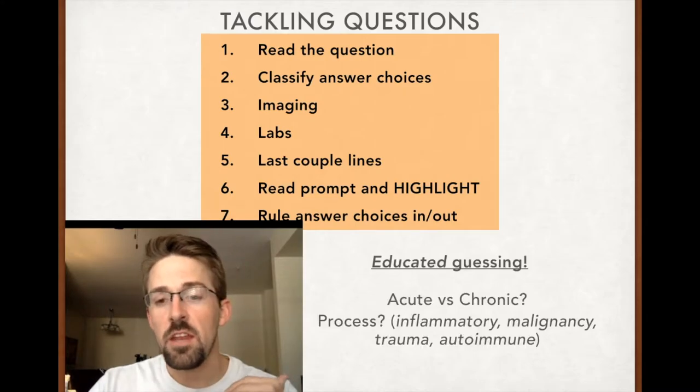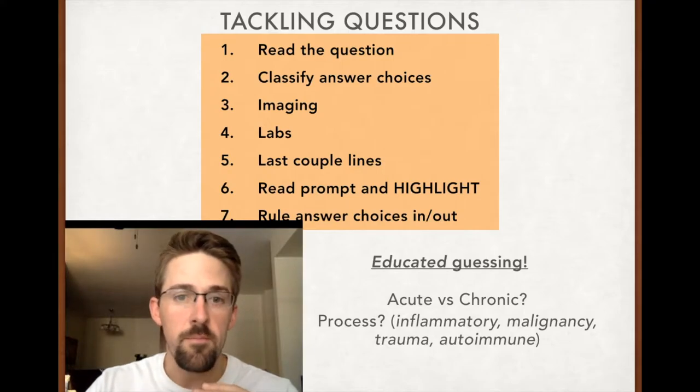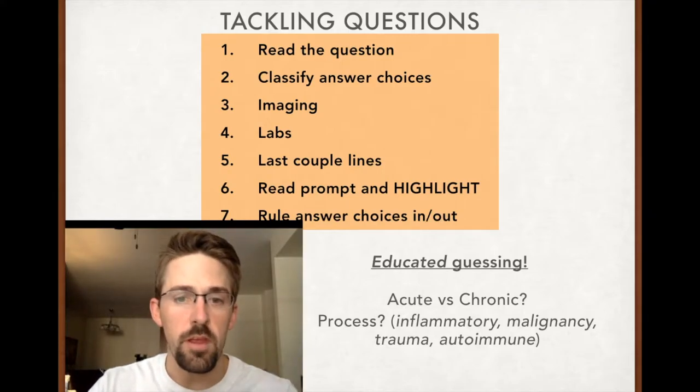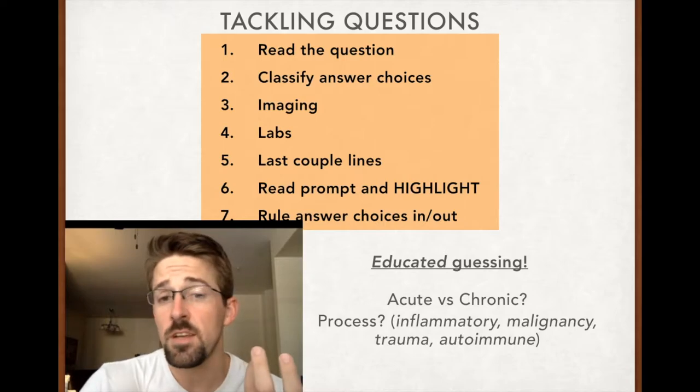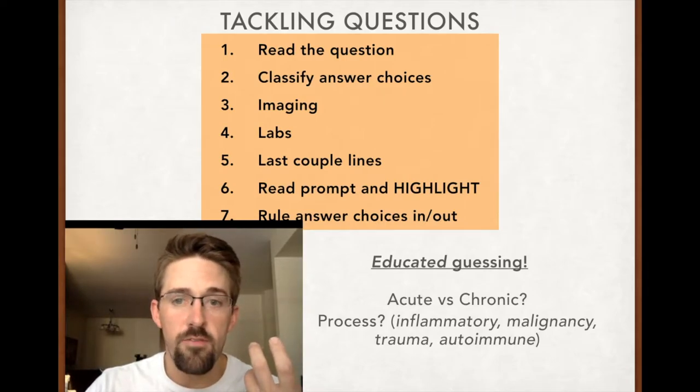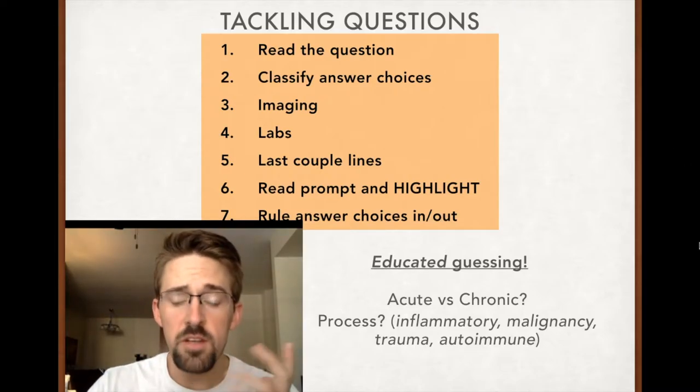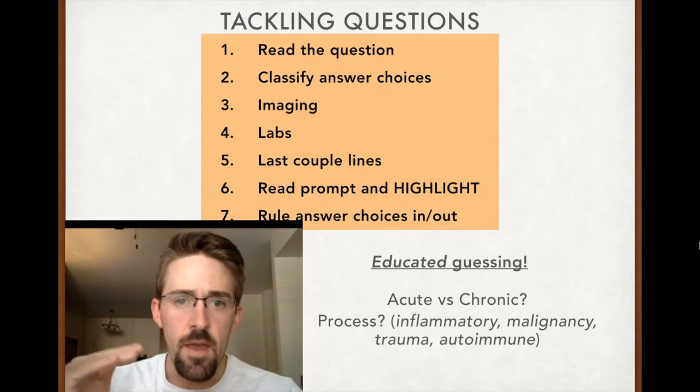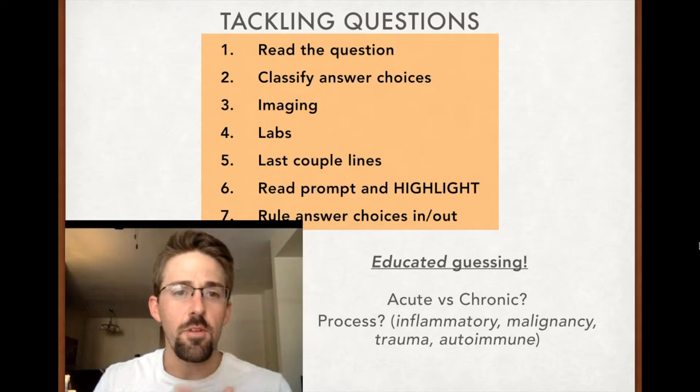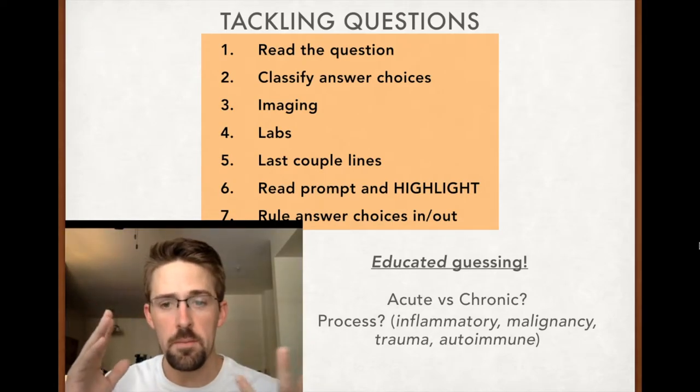Importantly, educated guessing. Acute versus chronic. A lot of the times, the question will give you a time frame that this new chief complaint has been around. If they've been taking lisinopril for 30 years and they've got this new cough for a week, maybe it's not the lisinopril. Then process. If you've got all sorts of different answer choices and one of them is an antibiotic, and based on the question stem you're really thinking that this is probably an infectious process, maybe go with the antibiotic.